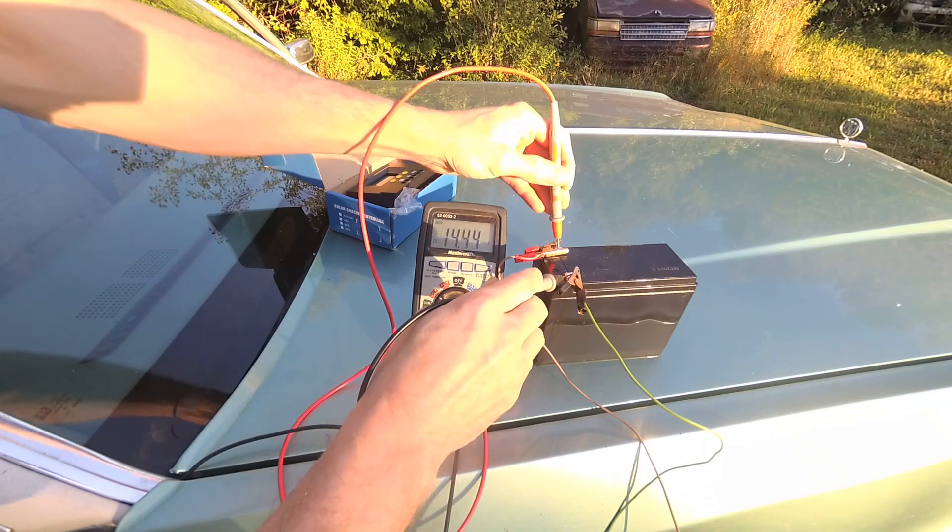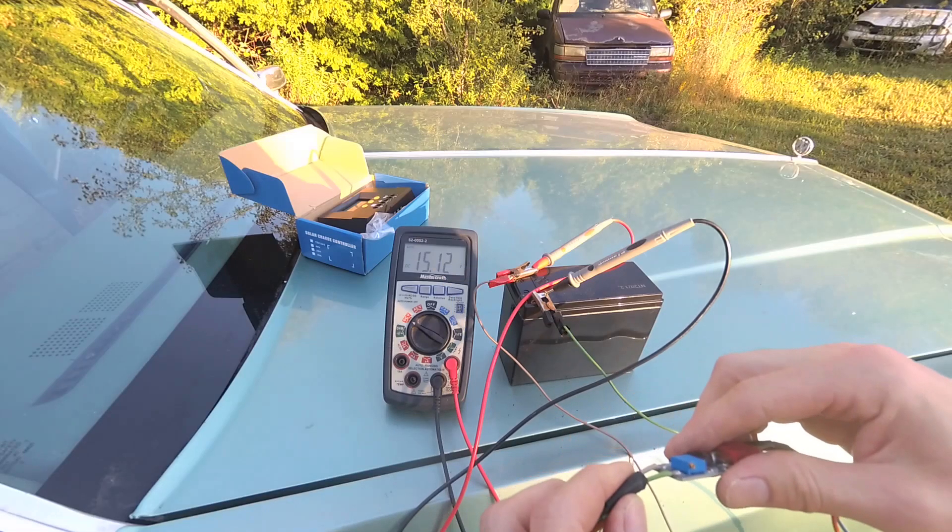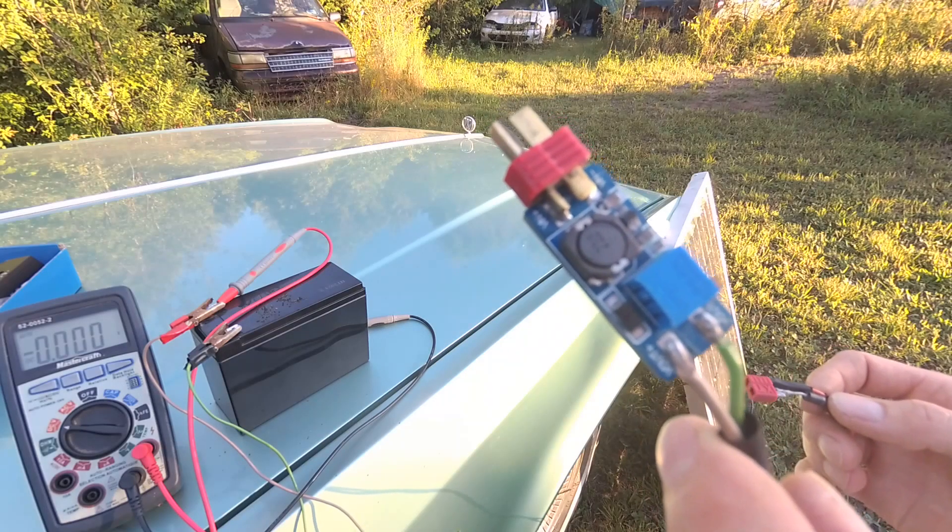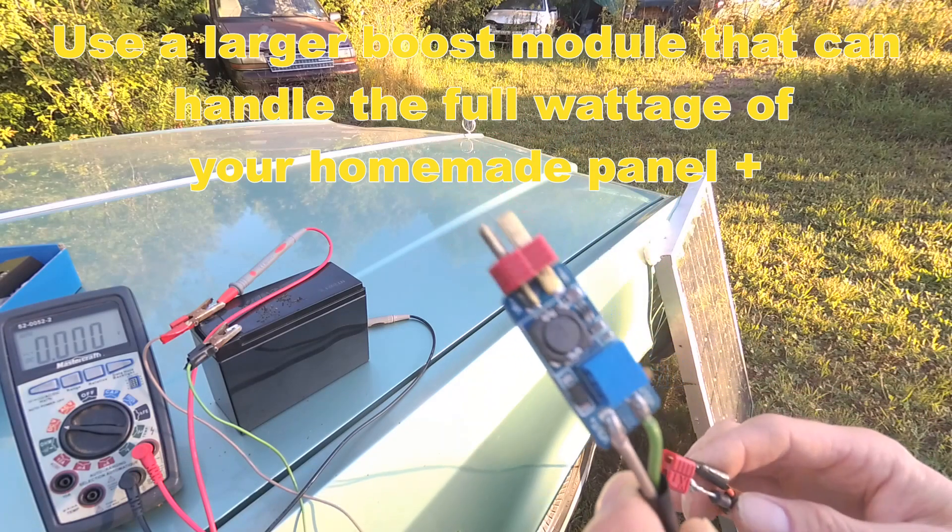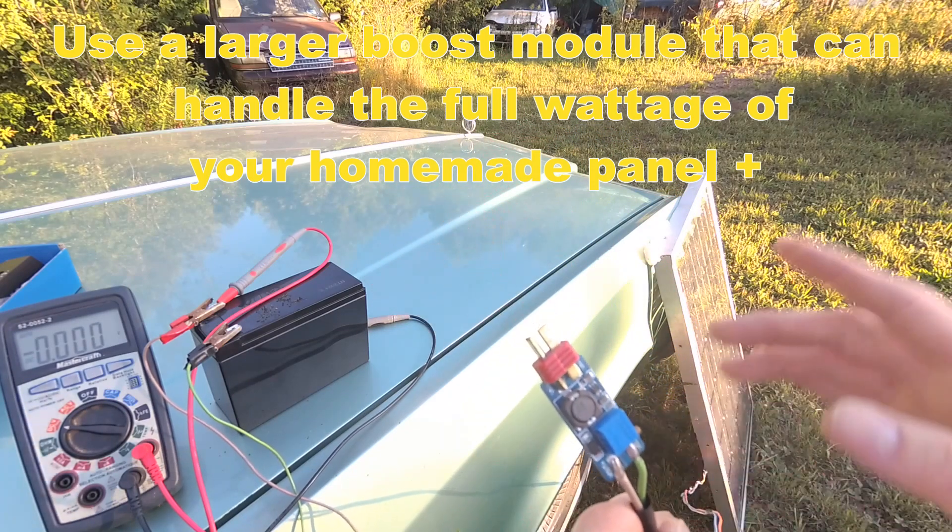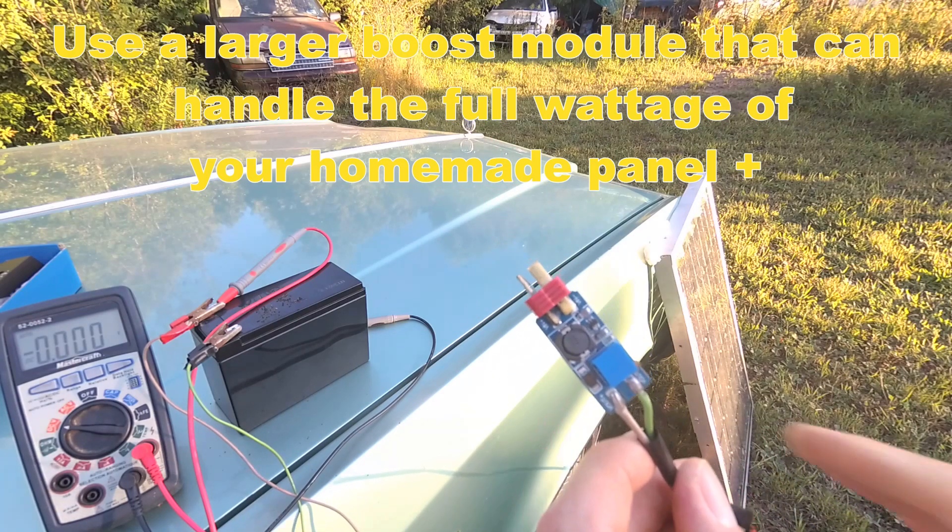So now we're creeping up to 14.5. Boost module is getting warm. We don't want to put that much voltage. This boost module is pretty small, you can only get about 2 amps out of it. So I wouldn't recommend using this to charge batteries off of a panel that's actually 65 watts, because the current is going to be more than this can handle.